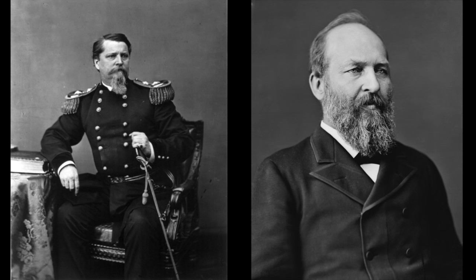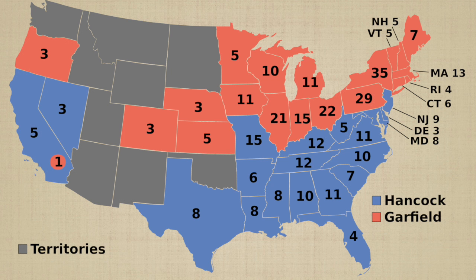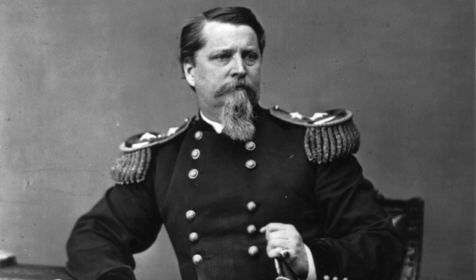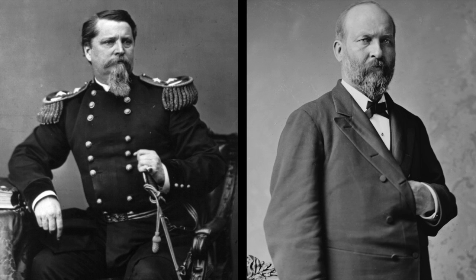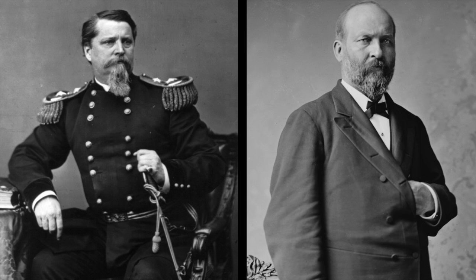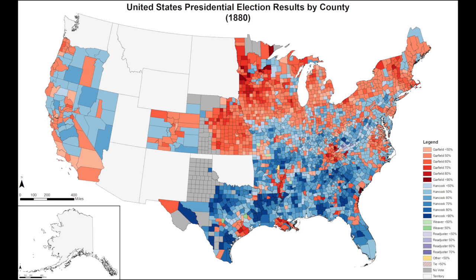And here are the results. Boy, was this one a squeaker. It was extremely close with the popular vote, but in the Electoral College, not so much. James Garfield won, becoming the 20th president in American history. He received 214 electoral votes. Winfield Hancock received 155 electoral votes, but that may be deceiving — fewer than 2,000 votes separated Hancock and Garfield, making this election the smallest popular vote victory ever recorded. Looking at the electoral map, do you notice a pattern? Hancock dominated the South and Garfield the North.